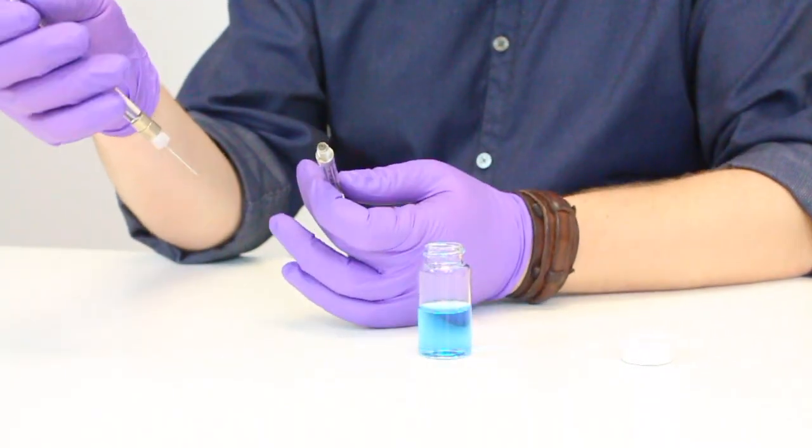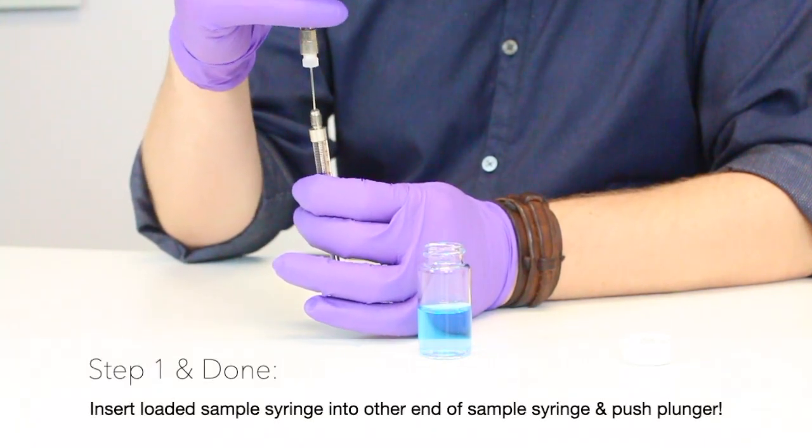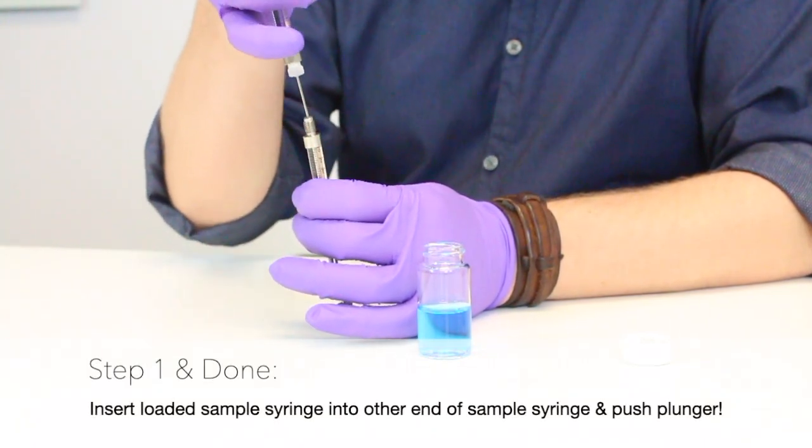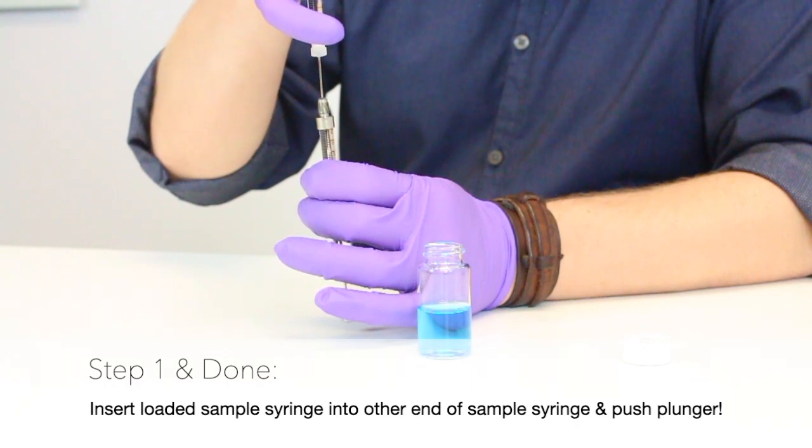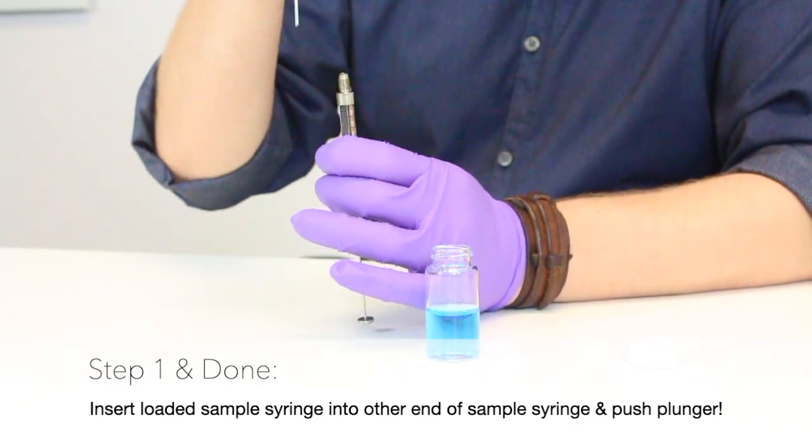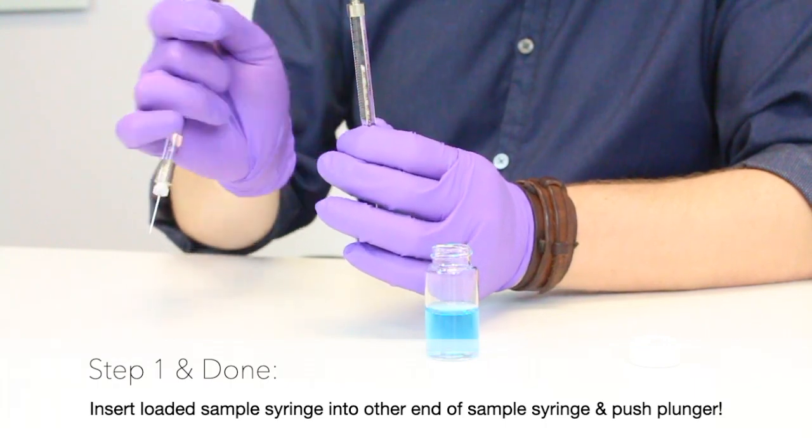Now to load it bubble free I just take this, place it in the other end of the sample syringe, press the plunger, and the sample transfers bubble free.